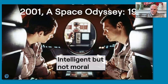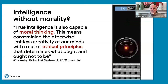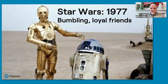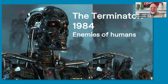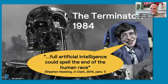In 2001: A Space Odyssey, they were intelligent but not moral. Chomsky, Roberts, and Wadam talk about how true intelligence is also capable of moral thinking — constraining the otherwise limitless creativity of our minds with ethical principles. It's not enough just to be a genius; you have to be a genius who empathizes. Star Wars 1977 gave us bumbling but loyal friends. The Terminator gave us scary stuff — enemies of humans — which becomes a constant trend in science fiction. Even Stephen Hawking said that full artificial intelligence could spell the end of the human race, speaking about that in 2014.